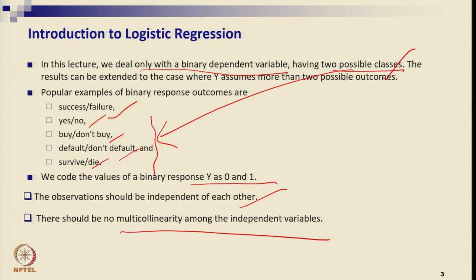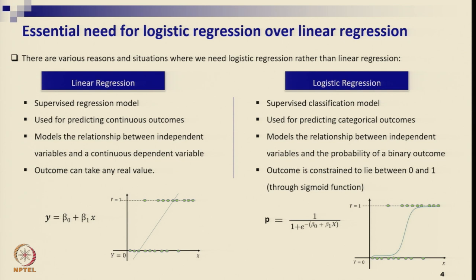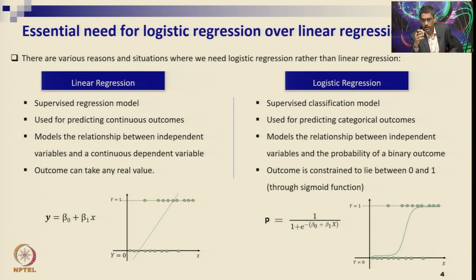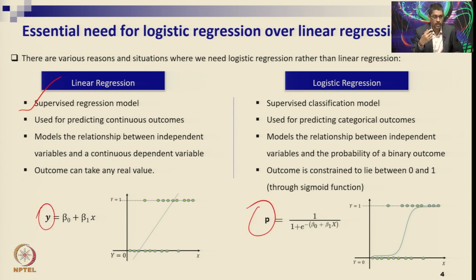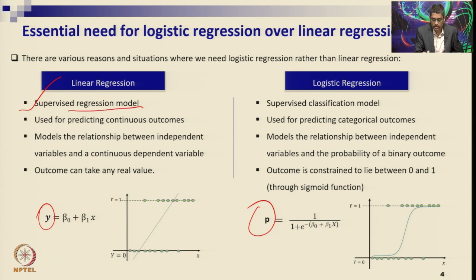Now let us understand the difference between linear regression and logistic regression. Both are supervised learning because you have a dependent variable in both cases — you are supervising the machine or algorithm to make predictions. Linear regression is called a supervised regression model, while logistic regression is called a supervised classification model, because the outcomes are not actual y values but are classified into categories.